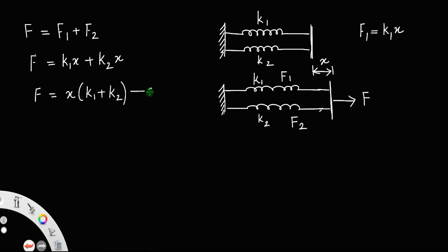Let us call that as equation number 2. Now, if you replace this combination with a single spring, let us say effective spring constant in parallel kp. And if you extend this spring with the same force, say force F in the horizontal direction, and let the extension produced is the same, that is x.